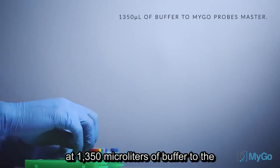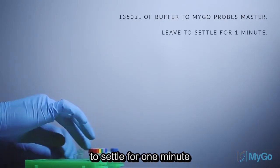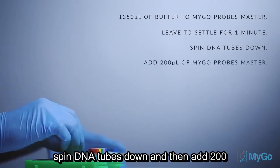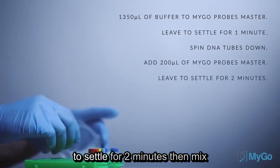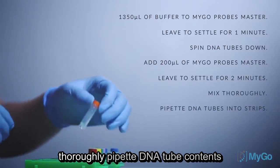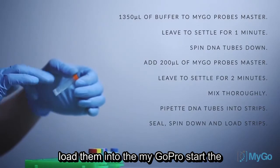Add 1,350 microliters of buffer to the vial of MYGO Probe's master, and leave it to settle for 1 minute. Spin DNA tubes down, and then add 200 microliters of MYGO Probe's master. Leave to settle for 2 minutes, then mix thoroughly. Pipette DNA tube contents into MYGO 8-well strips, seal the strips, then spin down the strips, and load them into the MYGO Pro.